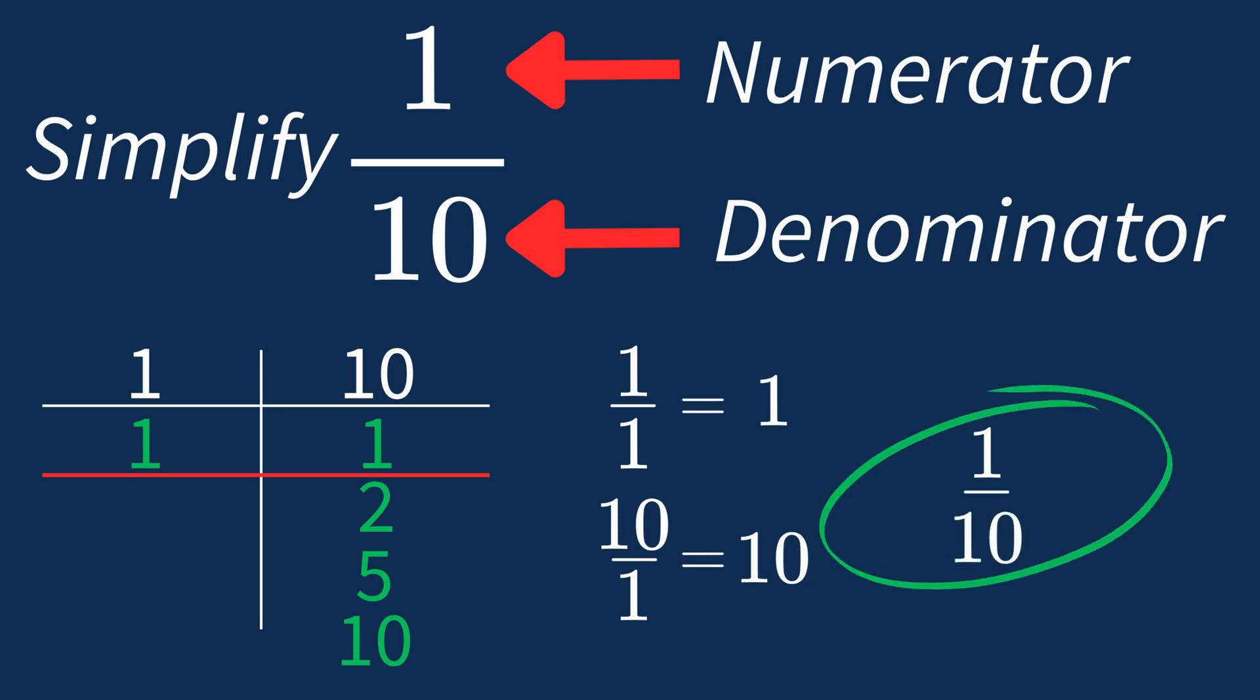This shows us that 1 over 10 is already in its simplest form. There's no larger number that can divide both parts evenly. So 1 over 10 is an irreducible fraction.